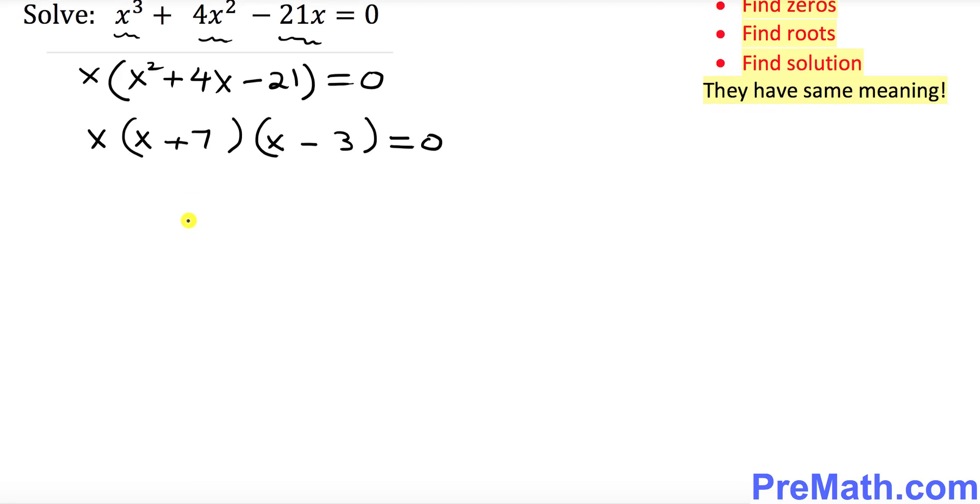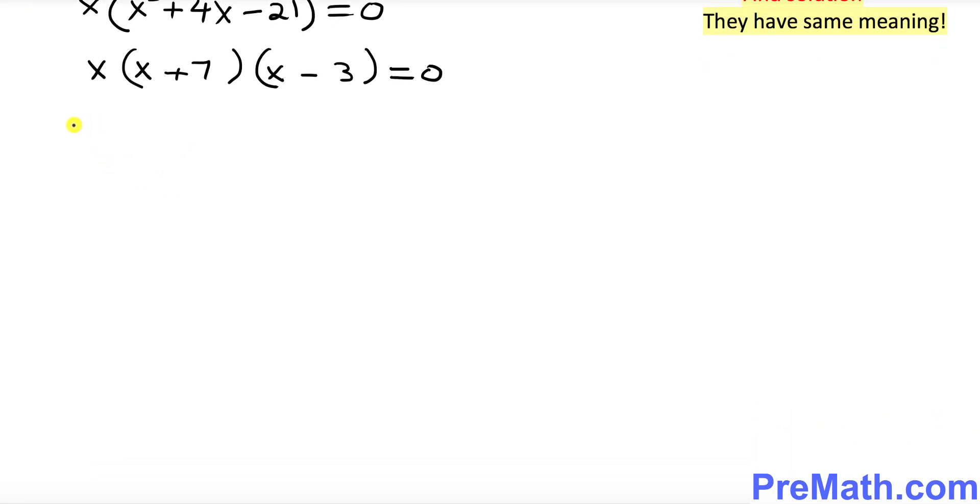So now let's go ahead and split them up. So x equal to 0. x plus 7 equal to 0. And x minus 3 equal to 0.